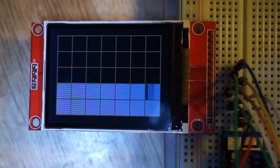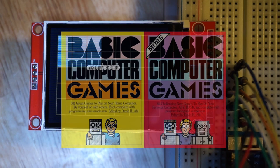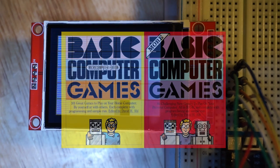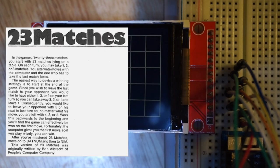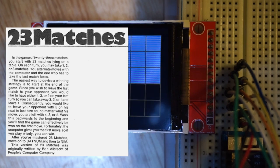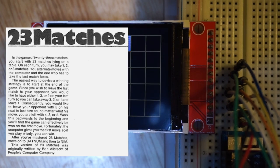Interestingly, those basic computer games books that I used to teach myself to code contained a form of the subtraction game. It went by the name NIM or 23 matches. As well as the chomp game.